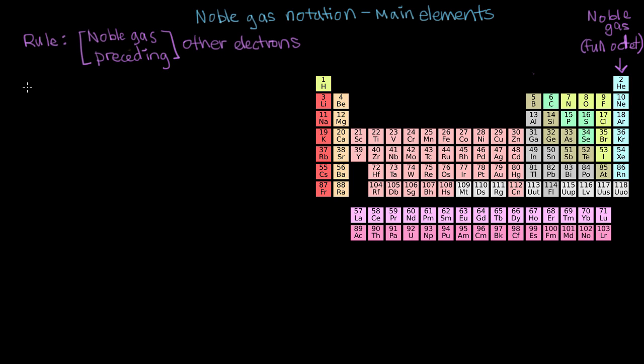So the first example we're going to talk about and write the configuration for is silicon. Silicon is right below carbon in the periodic table. And we can write its full electron configuration just for comparison. So if we start up here with hydrogen, silicon has the electron configuration 1s2, 2s2, 2p6.